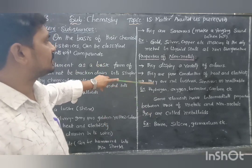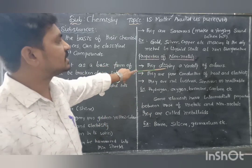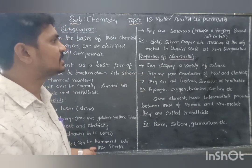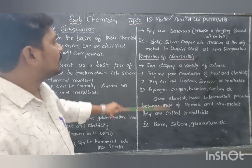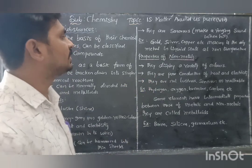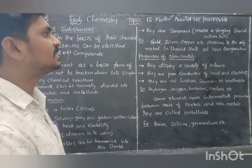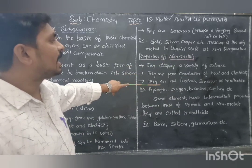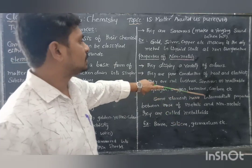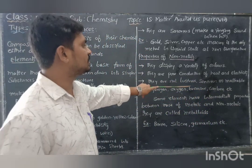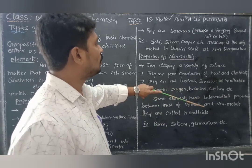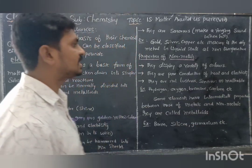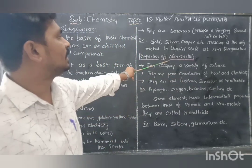Next, nonmetals. The properties of nonmetals are: they display a variety of colours — there is no single specified colour for nonmetals. They are poor conductors of heat and electricity — heat and electrical energy cannot travel through nonmetals. They are not lustrous, not sonorous, and not malleable — they do not glow or shine, do not produce sound, and cannot be made into a sheet.